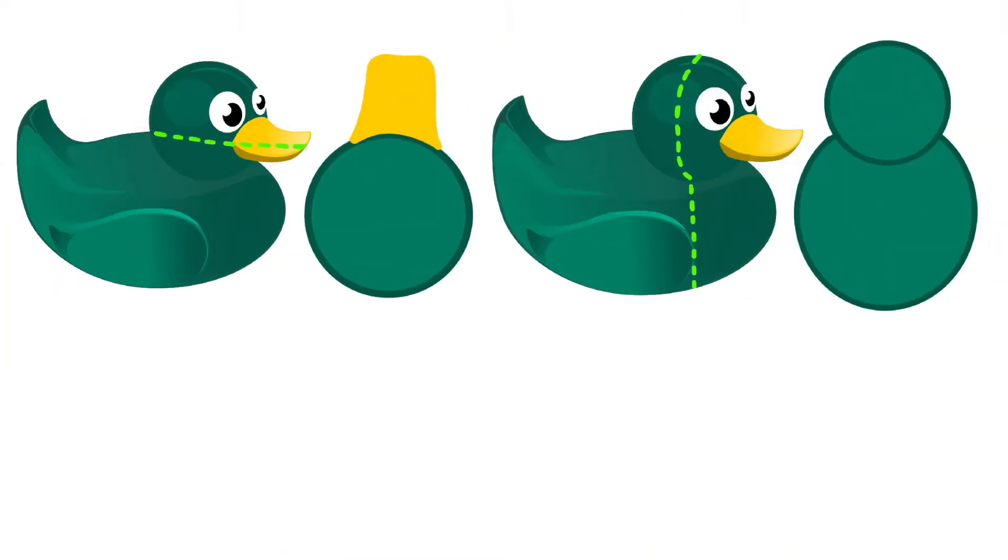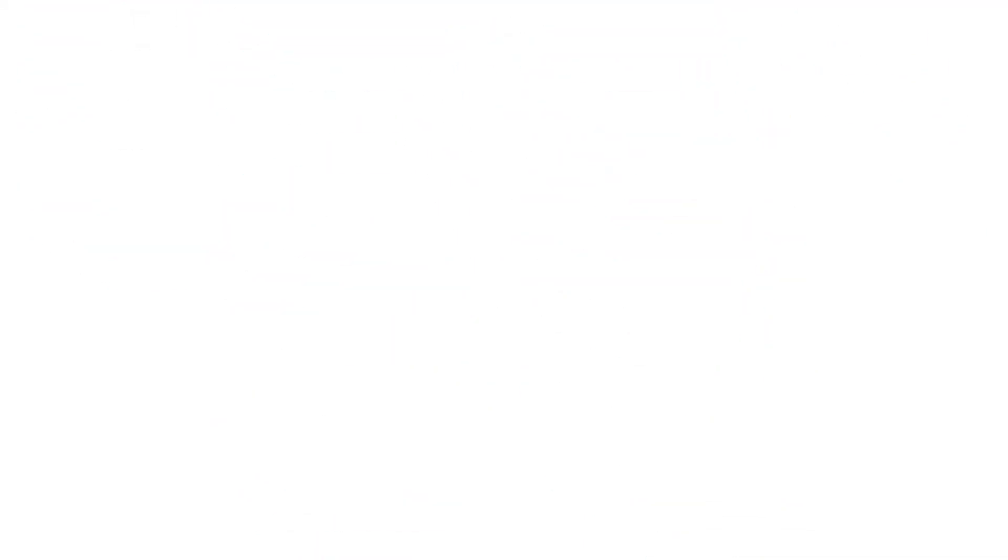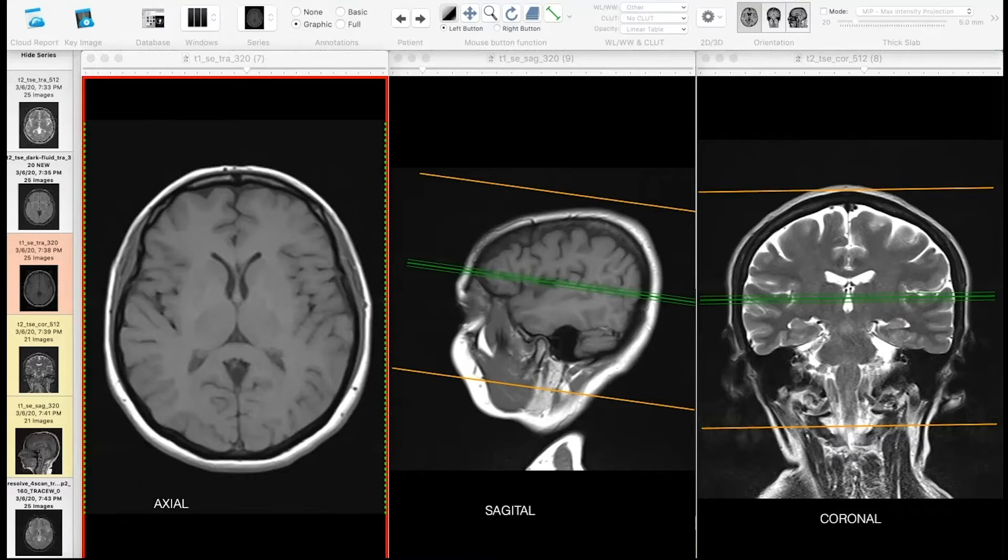We will begin by understanding the different planes in MRI. Here on the left, we have an axial plane. An axial plane is a cut from anterior to posterior and divides the brain into regions, one superior and one inferior.